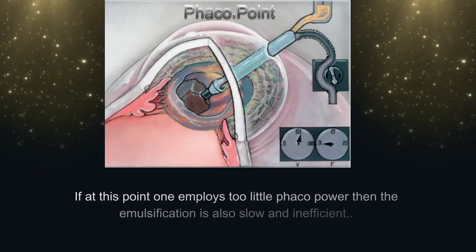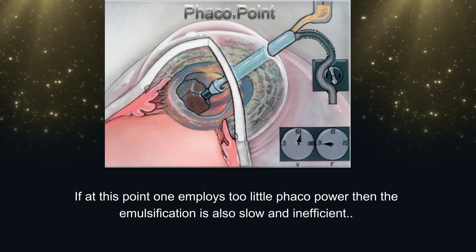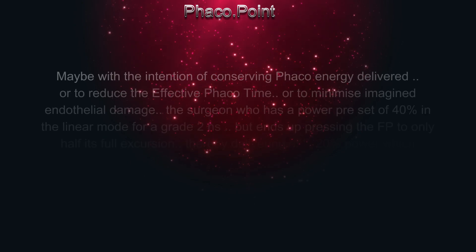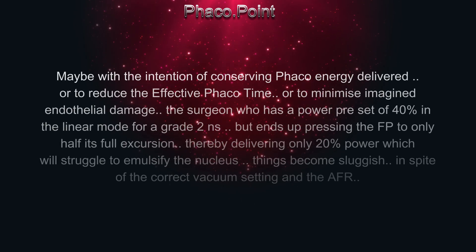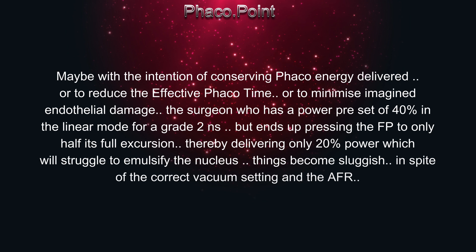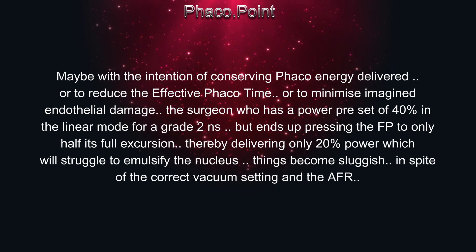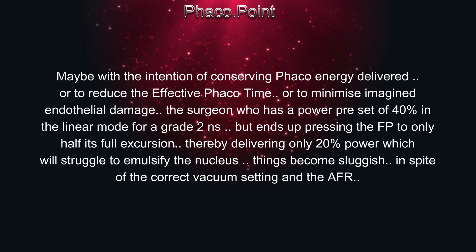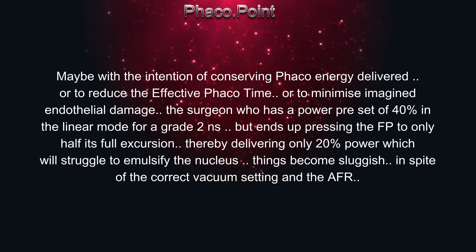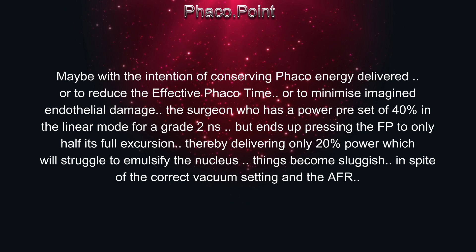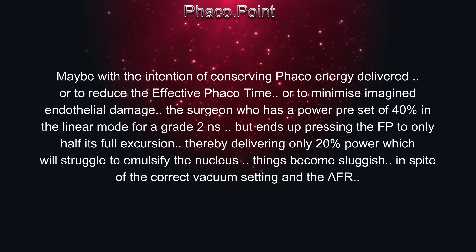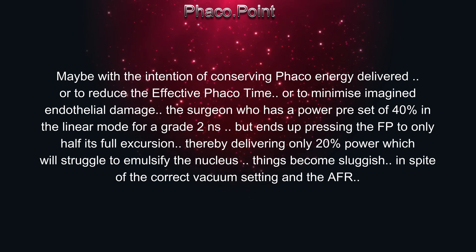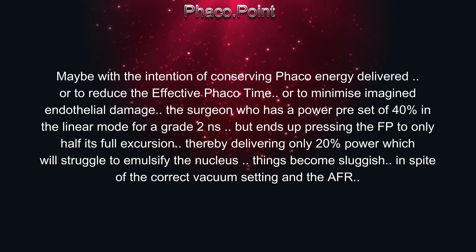If at this point one employs too little FACO power, then the emulsification is also slow and inefficient. Maybe with the intention of conserving FACO power delivered, reducing effective FACO time, or minimizing imagined endothelial damage, a surgeon who has a power preset of 40% in linear mode for a Grade II nucleosclerotic cataract but ends up pressing the foot pedal to only half its full excursion is thereby delivering only 20% of power, which will struggle to emulsify the nucleus. Things become sluggish in spite of the correct vacuum settings and AFR.